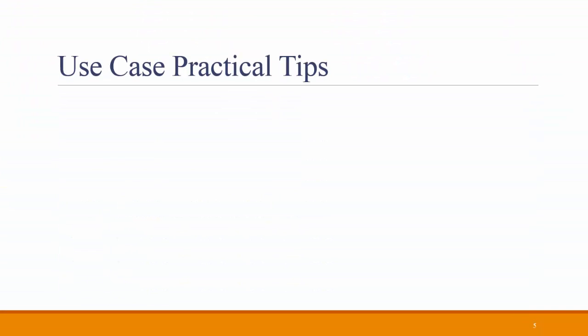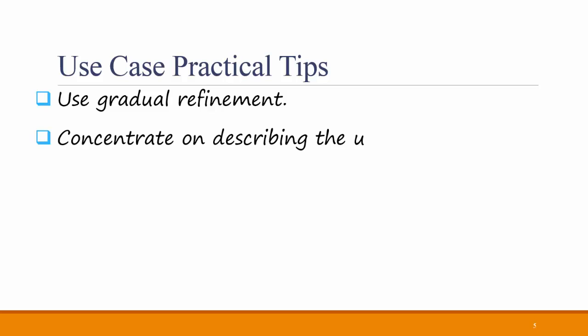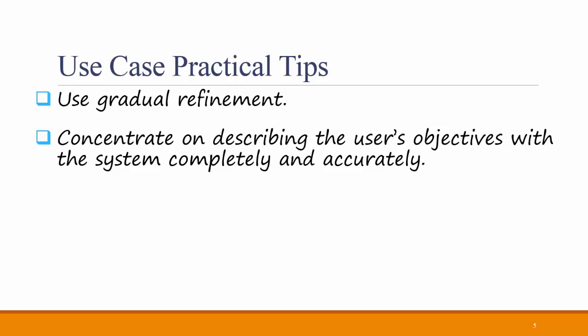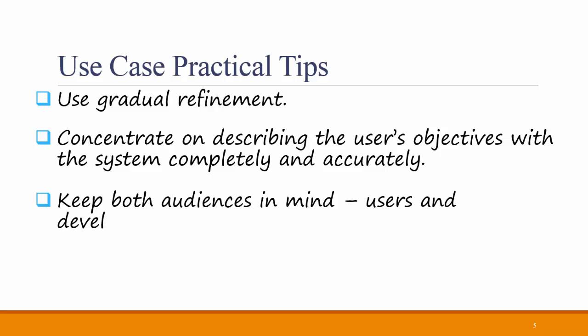Here are some practical tips for when you're creating use cases. First, use gradual refinement — do a thorough first draft and then continue refining as you get more information from the user. Concentrate on describing the user's objectives with the system completely and accurately; being thorough and being accurate should be your two guiding goals. Keep both audiences in mind — both users and developers. Don't make the language too technical or system-focused so that the user can't understand it, but at the same time make it clear how the use case describes not only what the user does but what the system does in response.